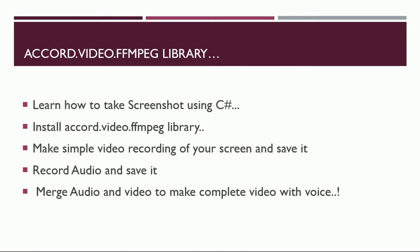First of all, we need to learn how to take a screenshot using C-Sharp — for that purpose, I have already uploaded a video. Second thing is to install the accord.video.ffmpeg library, which is used to capture the video stream. Third thing is to make a recording of your screen and save it. The fourth thing is to record audio and save that to your drive. And the last step is to merge that audio and video to make a complete video with voice.